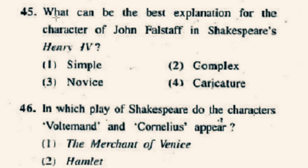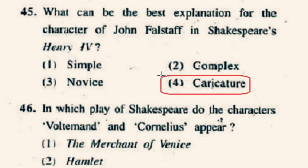Question number 45: What can be the best explanation for the character of John Falstaff in Shakespeare's Henry IV? John Falstaff is a fictional character mentioned in four plays by William Shakespeare and appears on stage in three of them. He is primarily a comic figure — a fat, vain, boastful and cowardly knight. The correct option is 4th, caricature — a representation of a person that is exaggerated for comic effect.